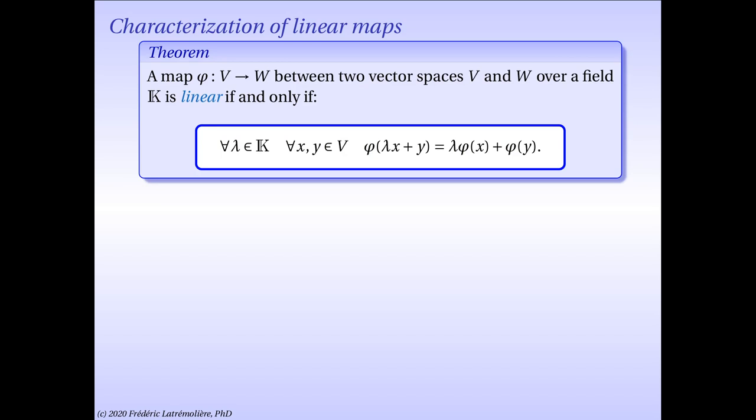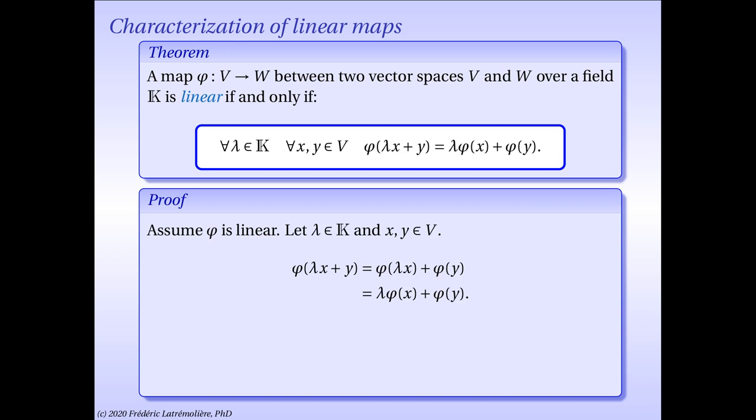Let's characterize linear maps. This characterization is really the tool we use most often when working with linear maps. A map phi from V to W between two vector spaces V and W over a field K is linear if and only if, for all scalar lambda and for all pair of vectors x and y in V, phi of lambda x plus y equals lambda phi of x plus phi of y.